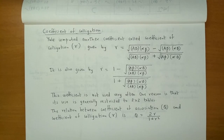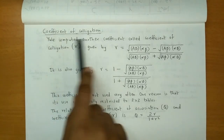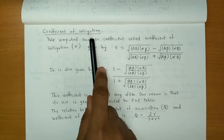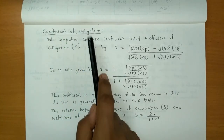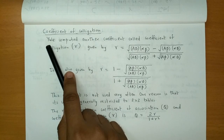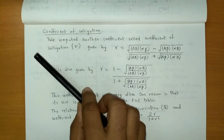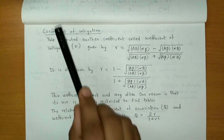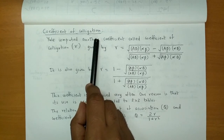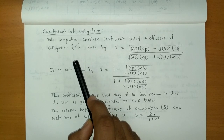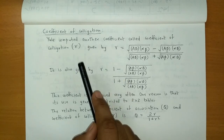In this video, we will talk about an important coefficient which is called the Coefficient of Colligation. This coefficient was invented by Yule. The Coefficient of Colligation is used for Binary Variables — variables that we can divide into two groups.